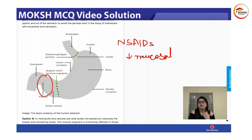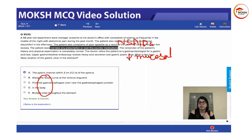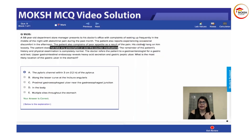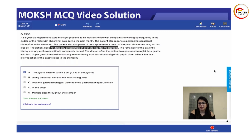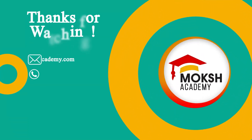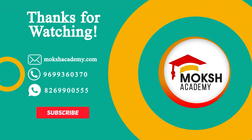NSAIDs decrease the mucosal barrier, so had it been an NSAID-induced ulcer, the answer would be multiple sites throughout the stomach. But because this is an H. pylori induced ulcer, these patients would have more ulcers in the pyloric region. Thanks for watching — please give a thumbs up and subscribe for more.